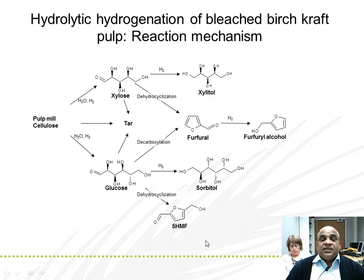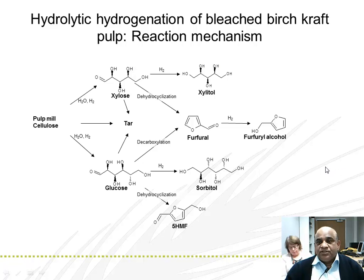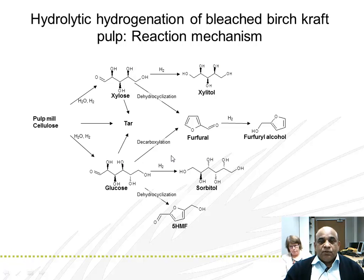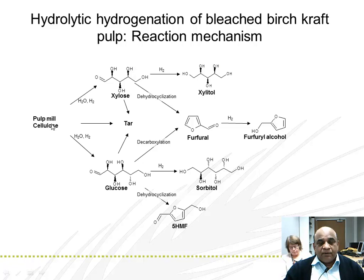The detailed reaction mechanism of the hydrolytic hydrogenation of bleached birch kraft pulp is explained as follows. The cellulose from the pulp goes to xylose.